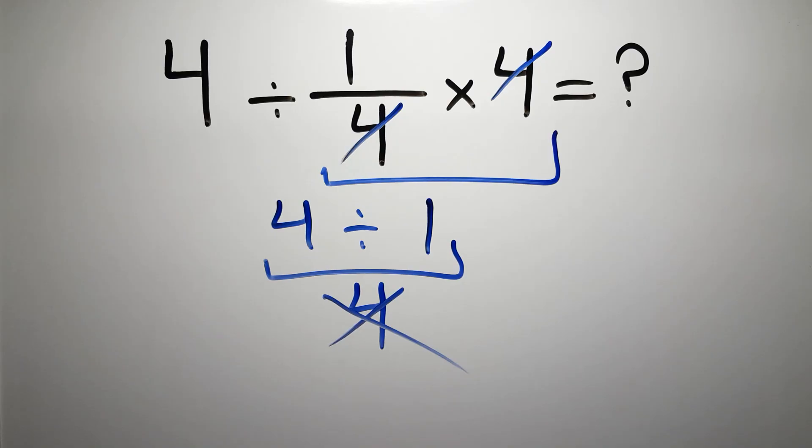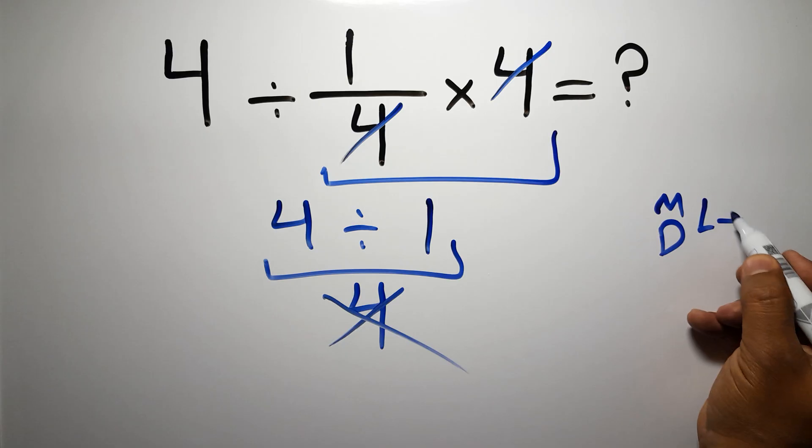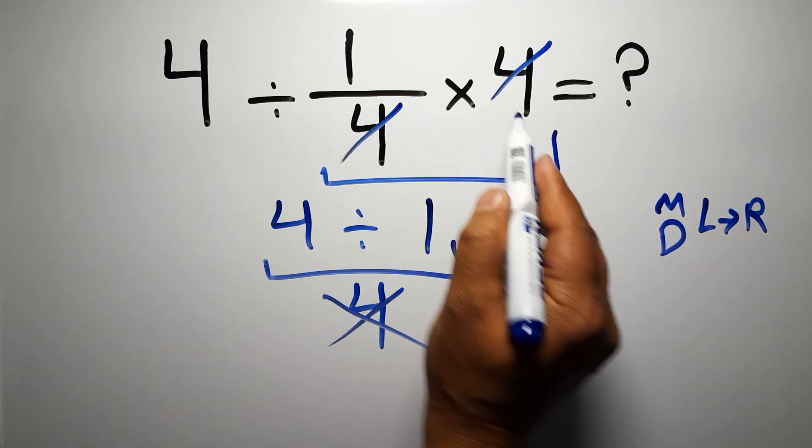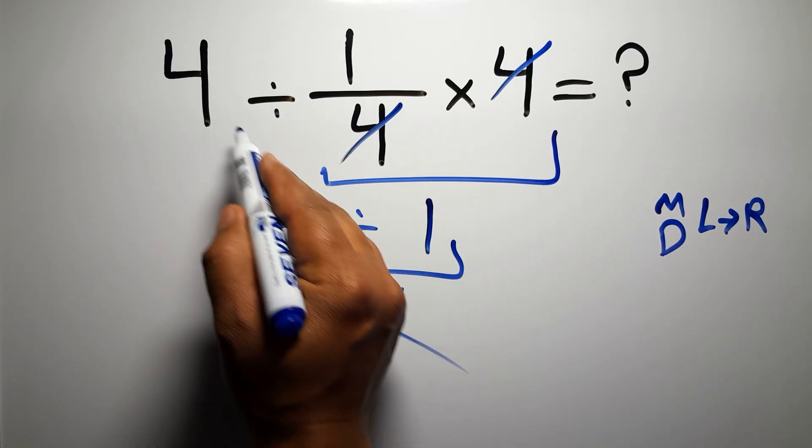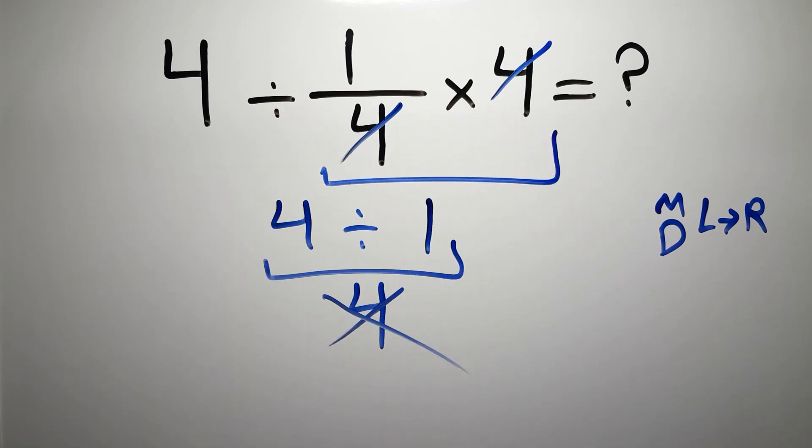Because according to the order of operations, multiplication and division have equal priority and we have to work from left to right. So here, first we have to do this division, then this multiplication. If we do this multiplication before this division, it is wrong.